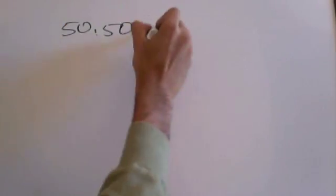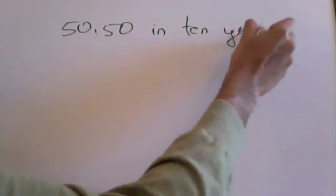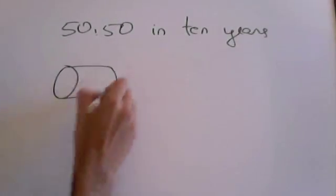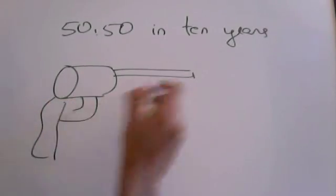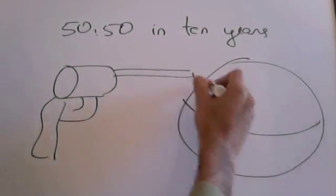Experts from Harvard and Stanford universities have estimated that the likelihood of a nuclear terrorist event occurring in 10 years is somewhere between 10 and 50 percent. That's like playing a game of Russian roulette every 10 years.